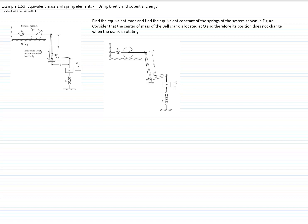Let's look at the system in a generic position where the bell crank lever is tilted, and therefore the mass m goes up and the sphere that is rotating without slipping goes to the left. We want to describe the system with only one variable. We will choose x as our variable, so we have to relate x to theta and x to the displacement of the sphere, x sub s.